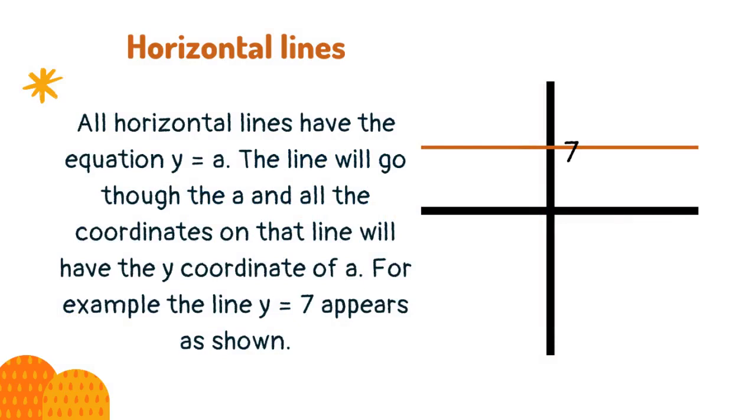All horizontal lines have the equation y = a. The line will go through there and all the coordinates on that line will have the y coordinate of a. For example, the line y = 7 appears as shown.